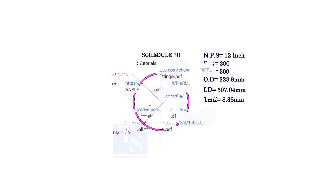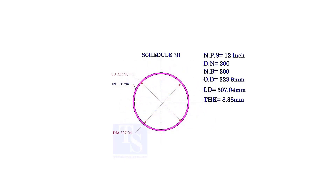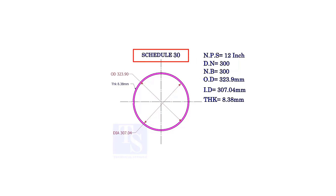Let us study the terms of a 12 inch pipe. The DN and NB sizes are the same. This is a schedule 30 pipe. Read the OD, ID, and thickness.